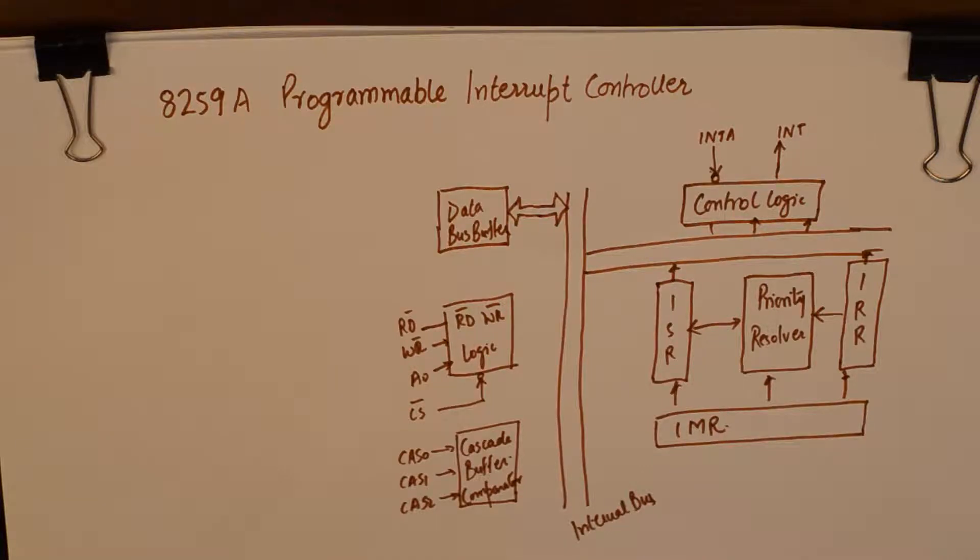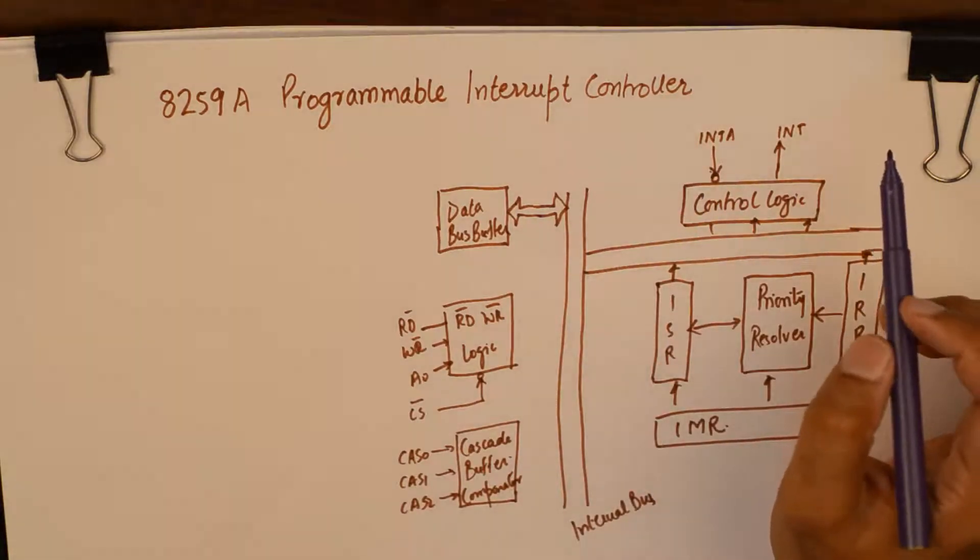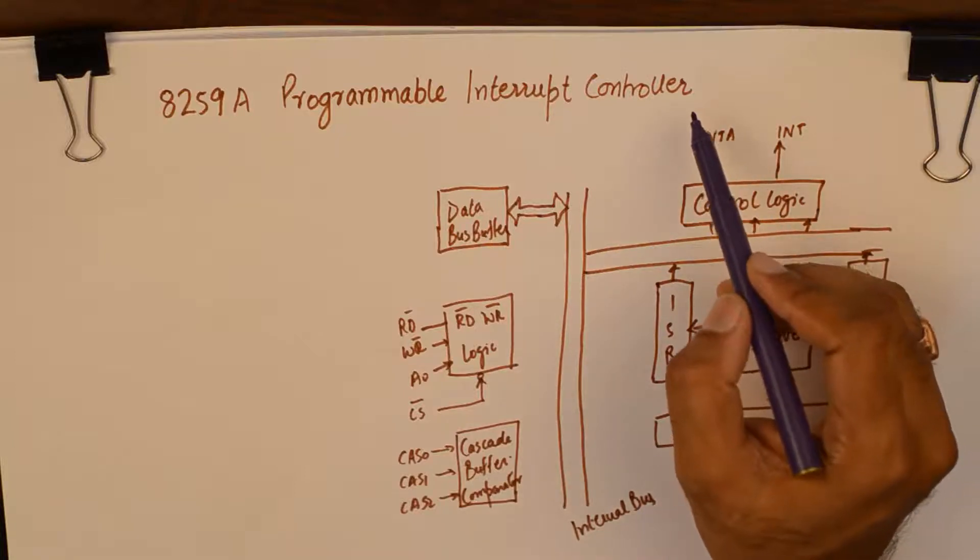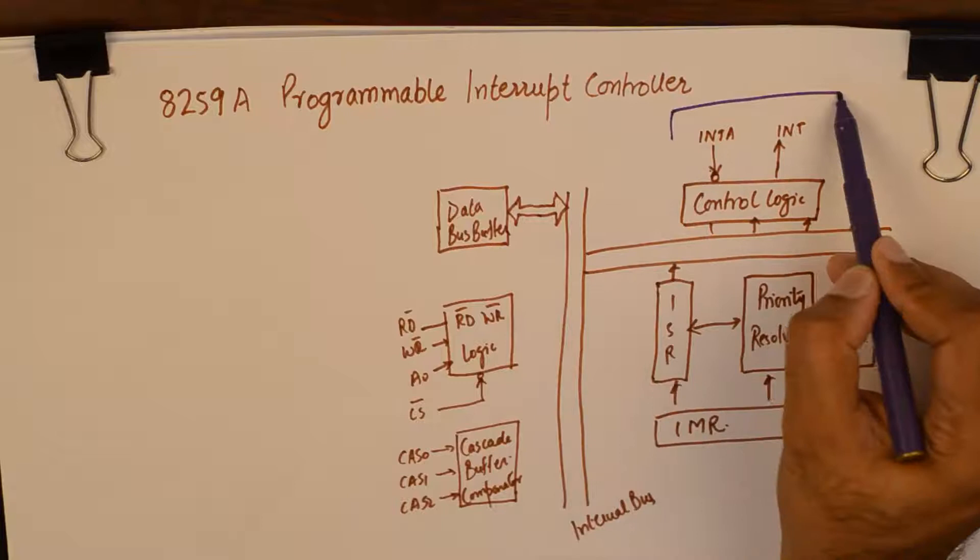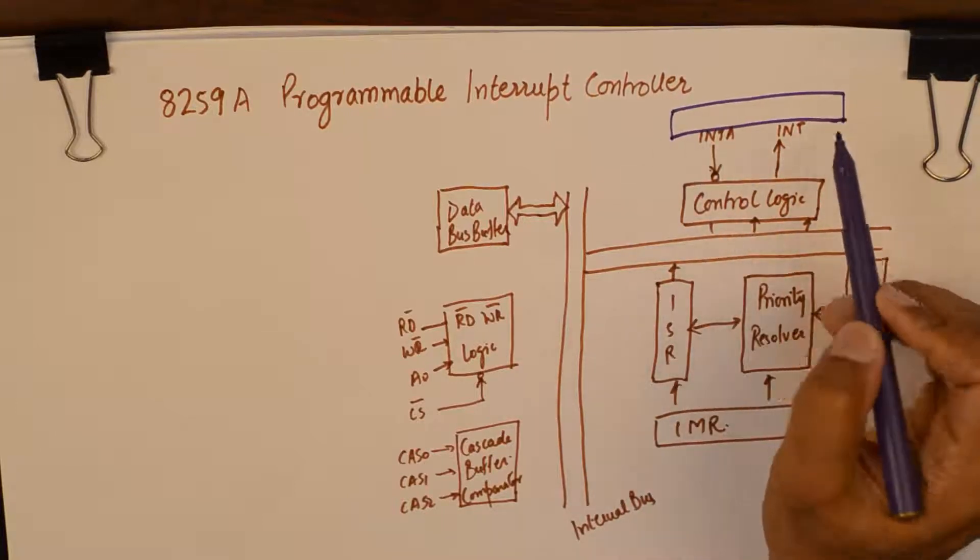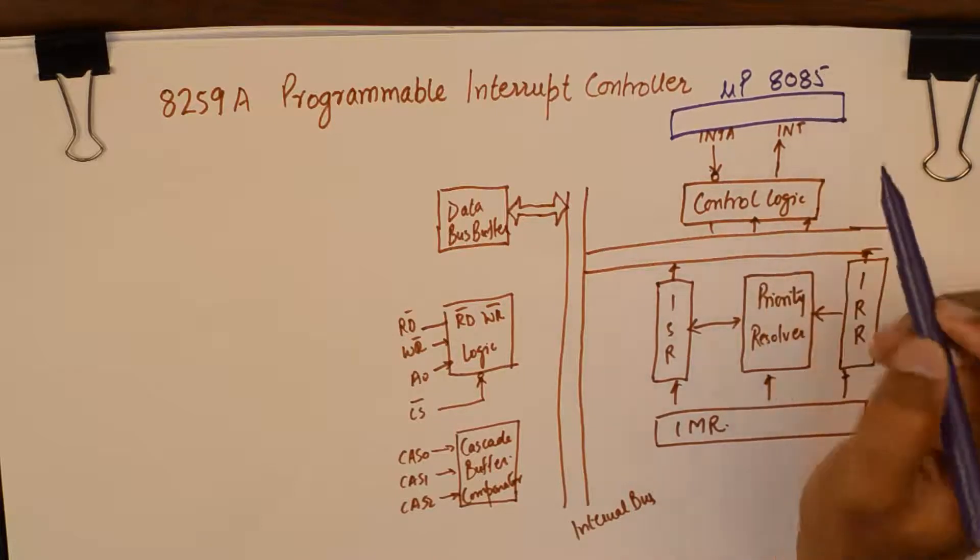But now we are going to understand how this peripheral device is interfaced with 8085. The point of interface of 8259 is the interrupt and interrupt acknowledge pins.